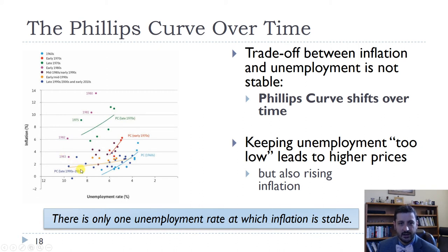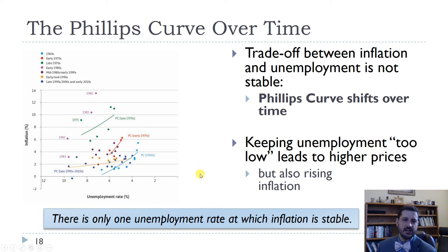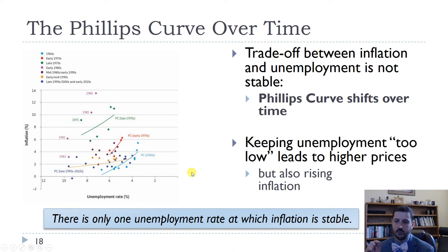As inflation came down in the 80s and into the early 90s, a more stable relationship emerged. By the late 2000s we had a flatter Phillips curve, but at least the points were more coherent. The argument here is that we can't really trade off unemployment for inflation — there's really only one unemployment rate at which inflation is stable. That's the point we had in the labor market diagram where we're at equilibrium, sometimes called point B.